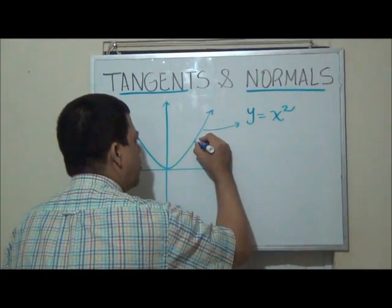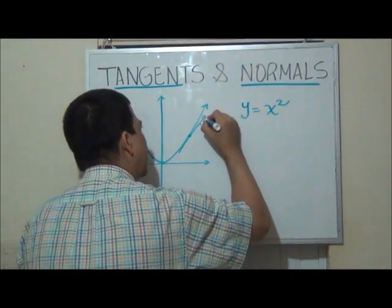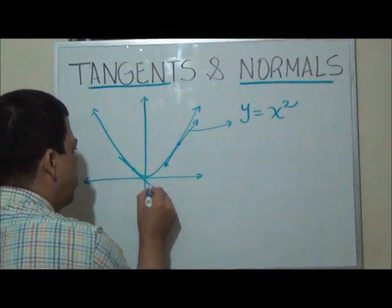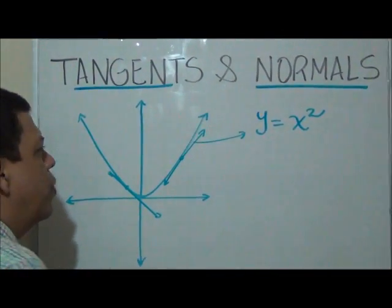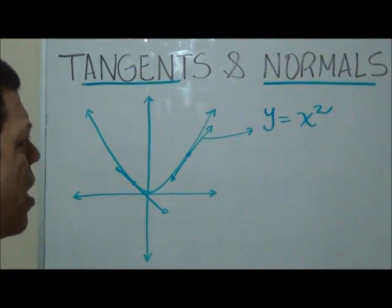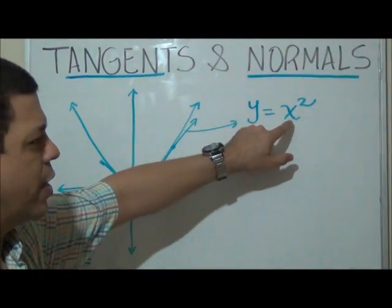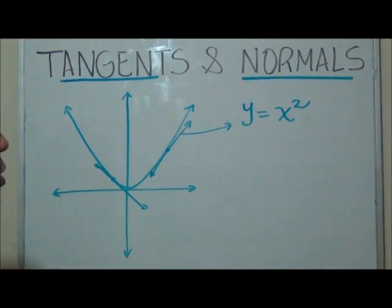For example, if the point is here, then this will be the tangent. So if the exercise says that we have to find the tangent to this curve, y equals x squared, we need a point. They have to give us a point.